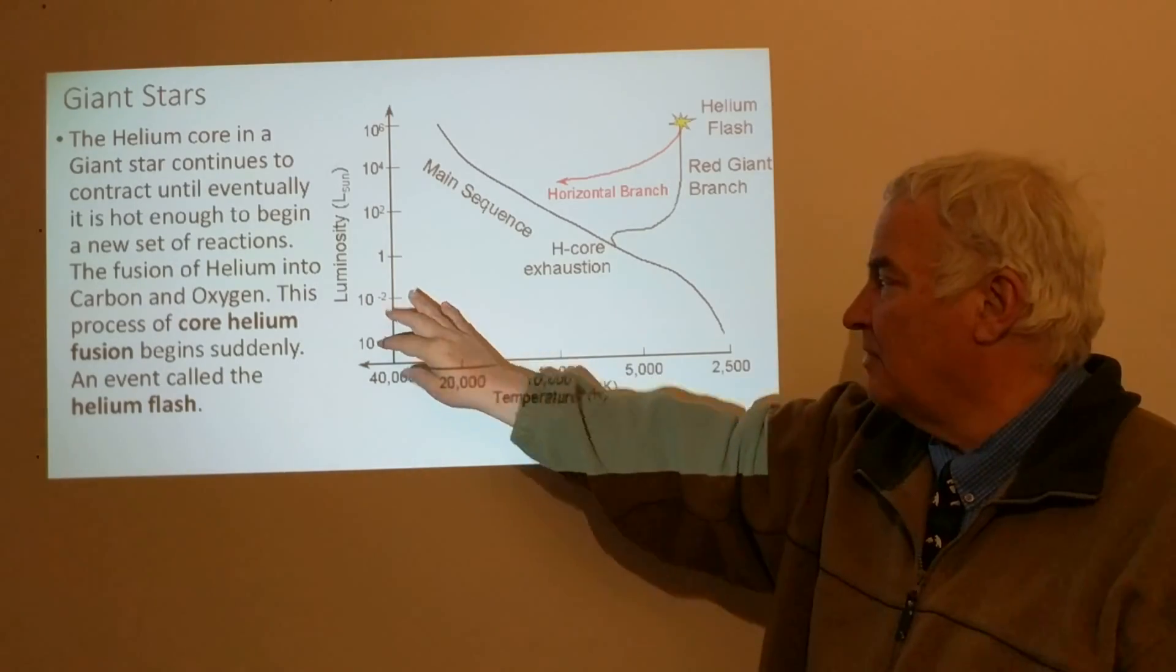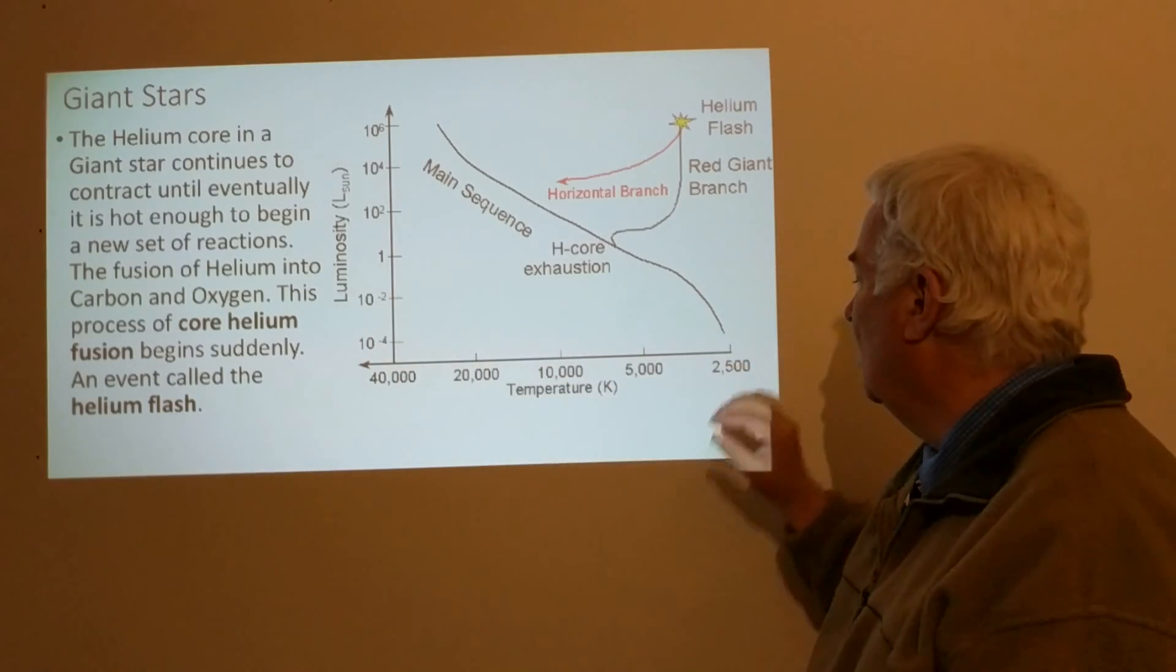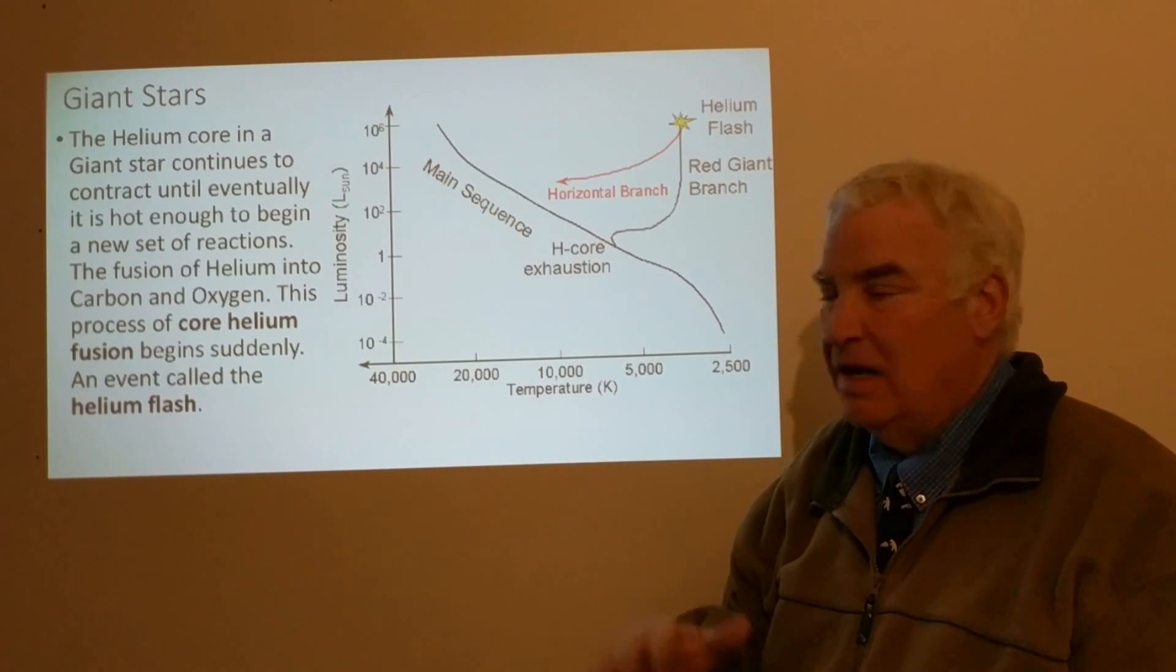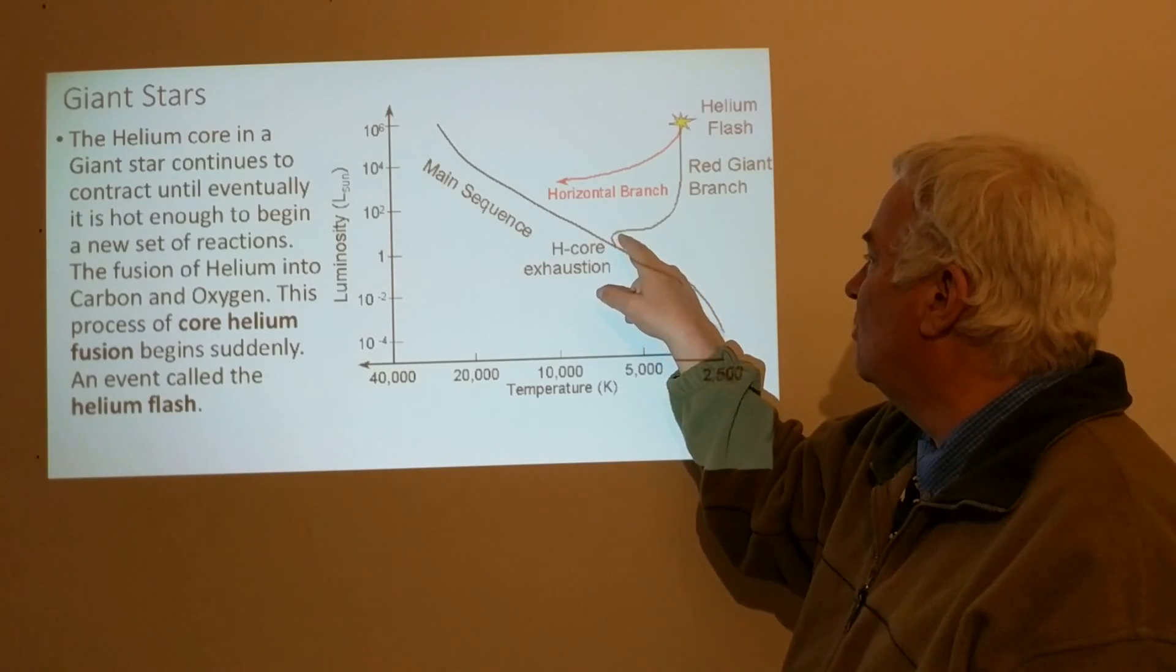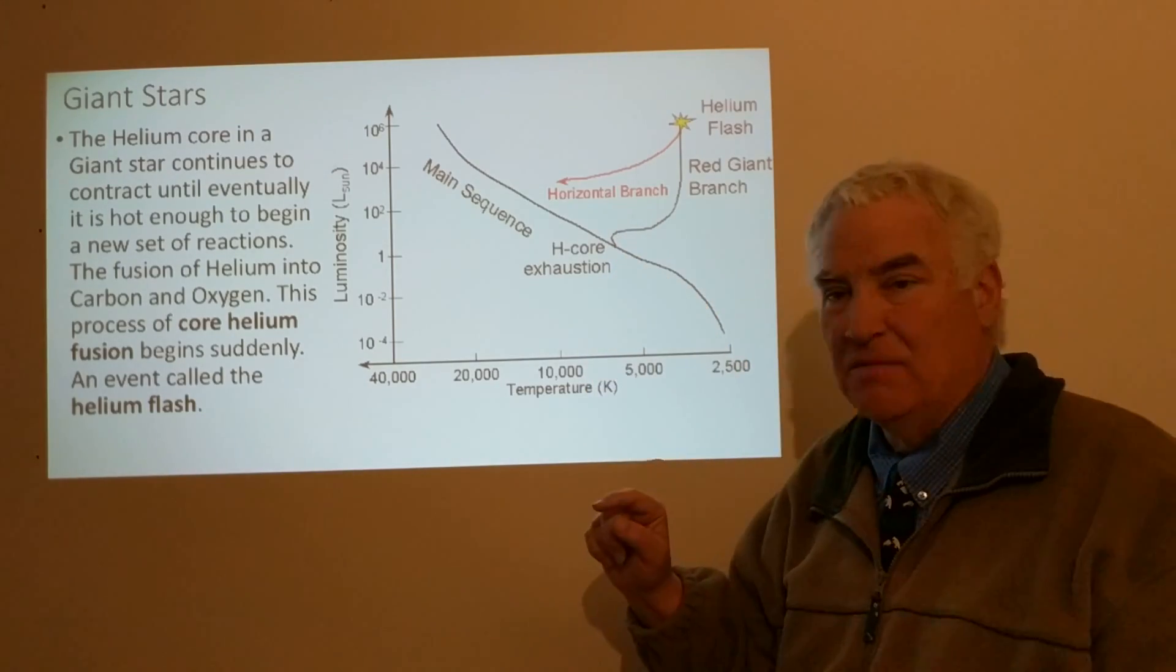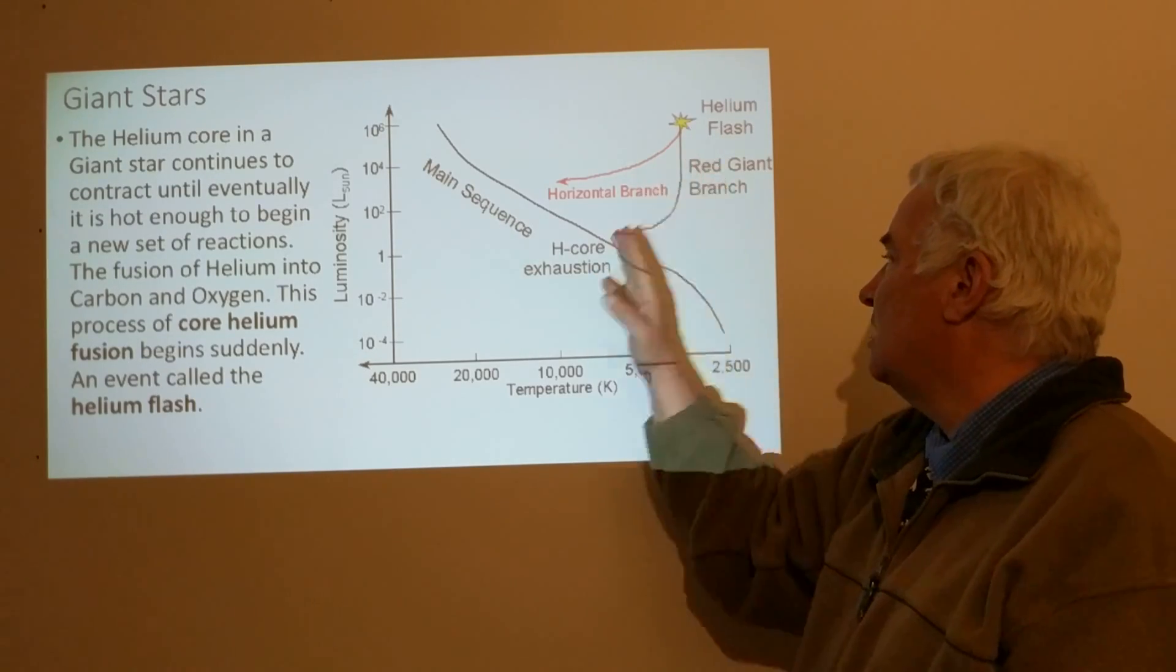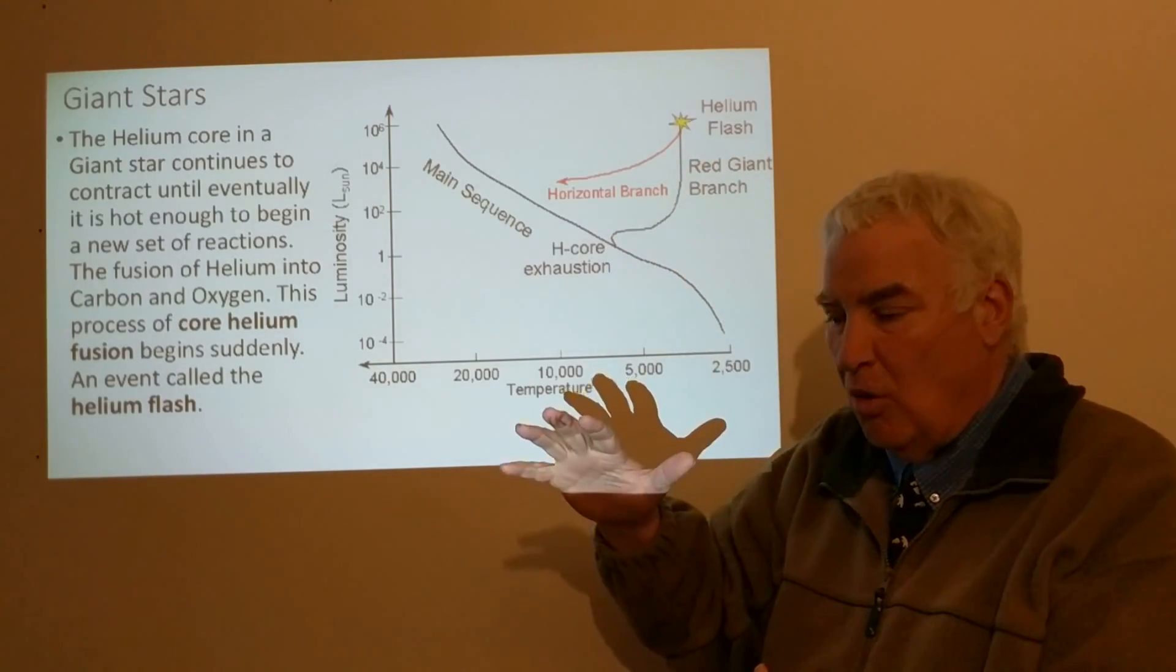The top right of the HR diagram is for stars that are very large, and the bottom left are stars that are very small. Cool and bright stars have to be very large to maintain that brightness. As the star leaves the main sequence, we follow the evolution as the star expands and becomes red, and then the helium flash occurs when the core contracts.